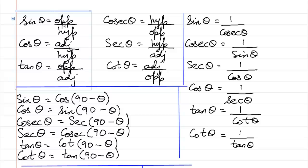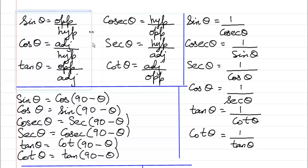Sin theta is equal to opposite upon hypotenuse. Cos theta is equal to adjacent side upon hypotenuse. Tan theta is equal to opposite upon adjacent. Cosec theta is equal to hypotenuse upon opposite. Sec theta is equal to hypotenuse upon adjacent.